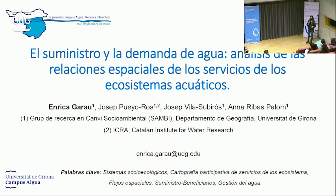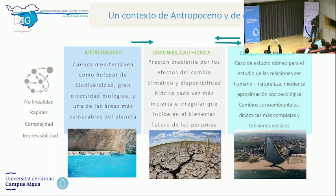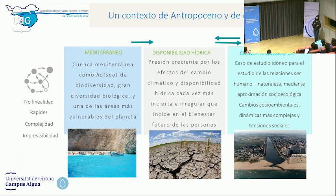Buenas tardes, yo soy Enrica Garau y hoy os presentaré una pequeña parte de mi tesis doctoral que estamos desarrollando junto con Ana Riva y Josep Puello del Instituto de ICRA y Josep Vila, titulada El suministro y la demanda de agua y el análisis de las relaciones espaciales de los servicios ecosistémicos acuáticos. Nuestra investigación se inserta en un contexto de antropoceno y de cambio global, caracterizado por una no-linealidad, una velocidad, una rapidez y una complejidad de los cambios socioambientales cada vez más difíciles de prever.